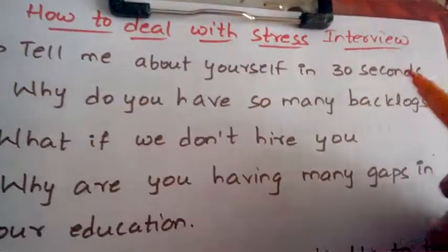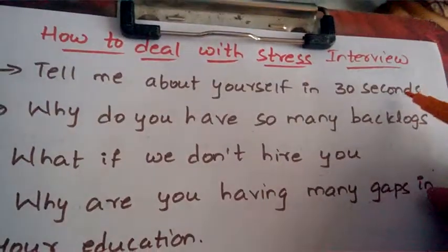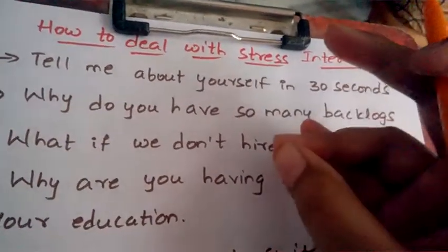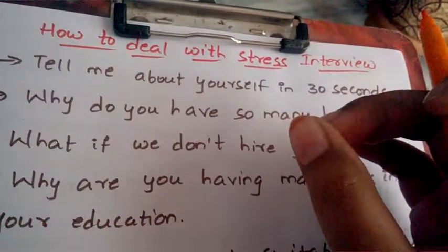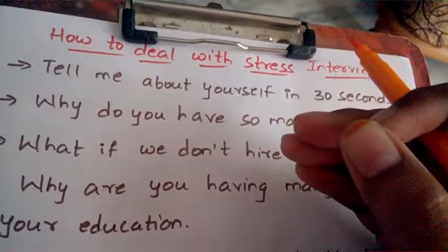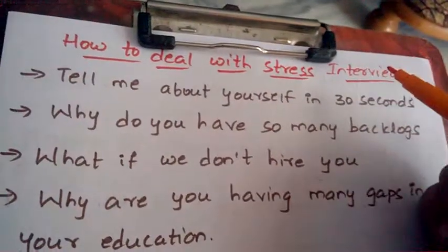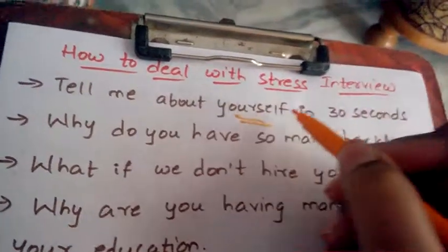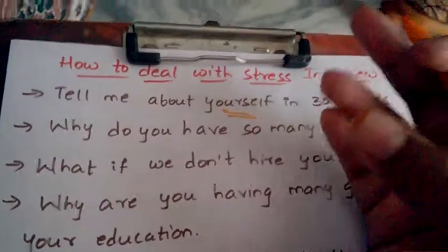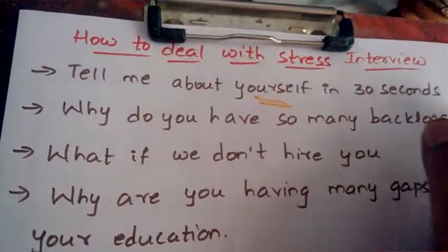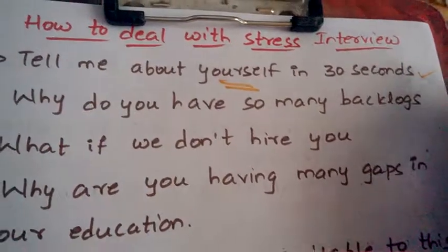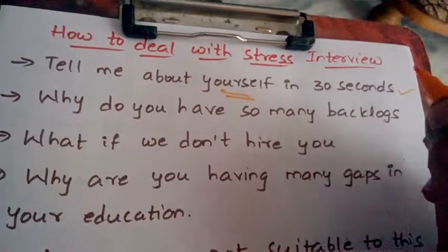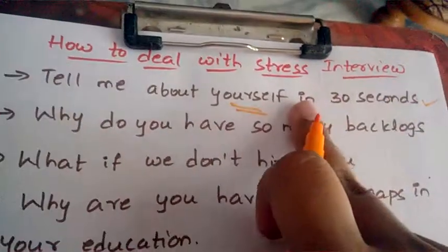The first question, which is very common, is 'Tell me about yourself.' You need to tell every detail about yourself — your name, educational qualifications, extracurricular activity details, and any specific skills you have. You also need to mention your hobbies, strengths, and weaknesses. This is the most common question; every HR interview round begins with it.